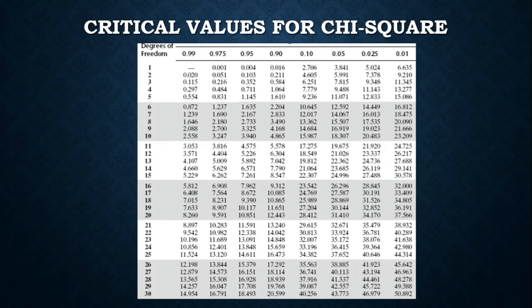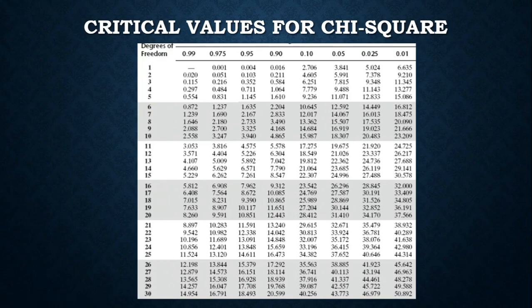These are the critical values for chi-square. The columns represent your significant levels or alpha levels, and the rows represent your degrees of freedom. Please note that we have a different way of computing degrees of freedom here compared to your t-test, so don't use the t-test formula.